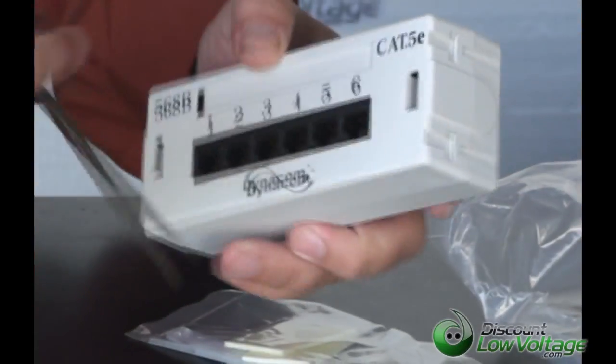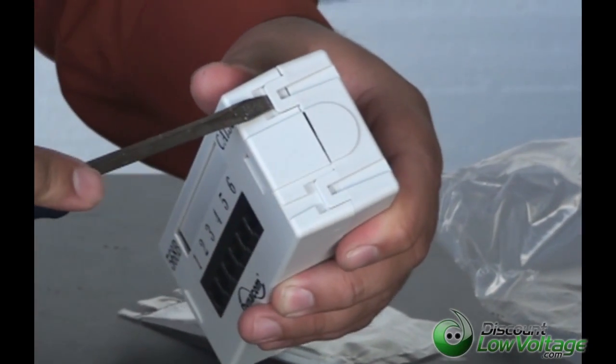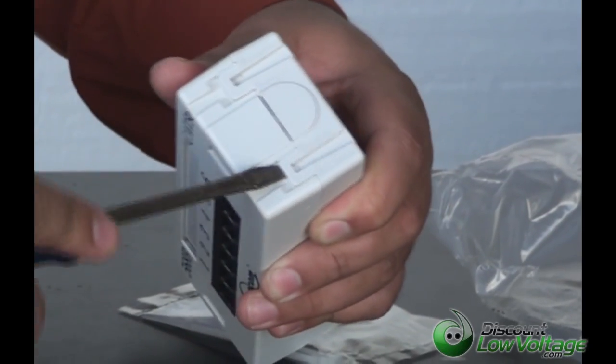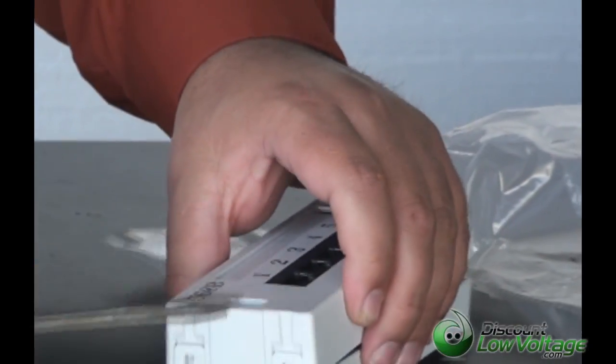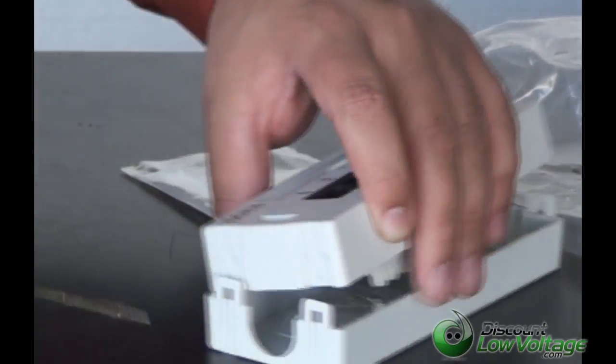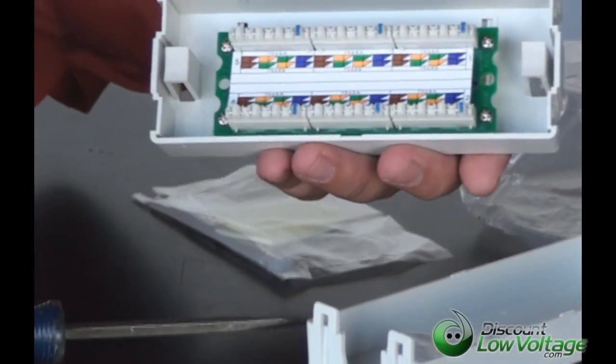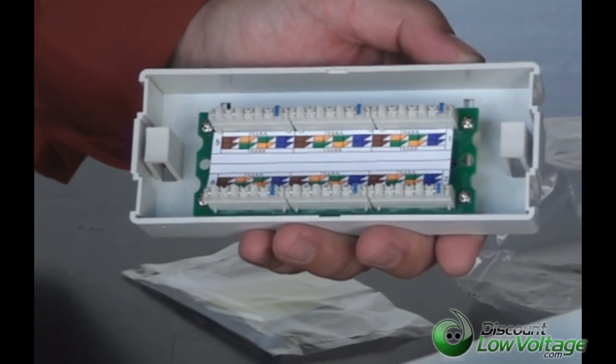Now let's crack the box open. This is Dynacom, a UL listed product, and the punch downs on this panel are very nice. I know with a lot of Chinese stuff coming over lately, there's definitely a lot of junk out there.